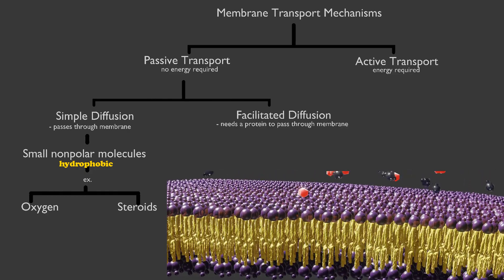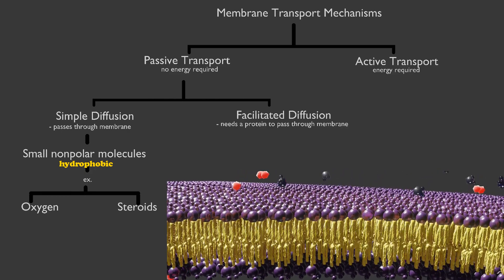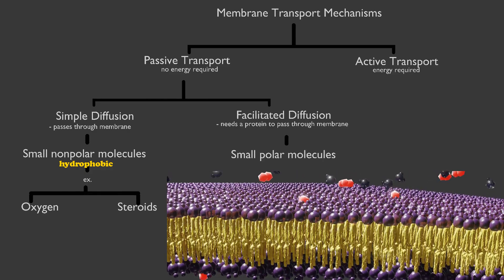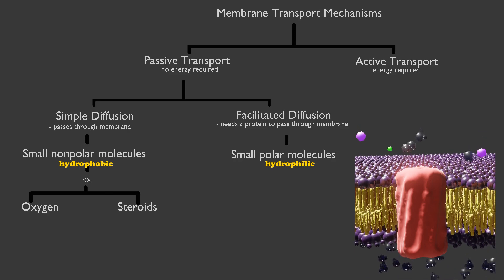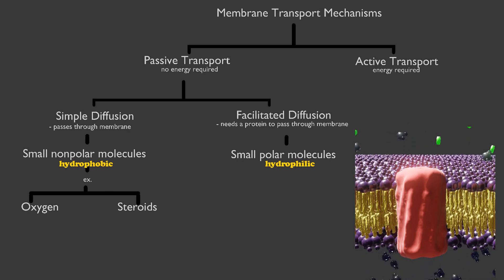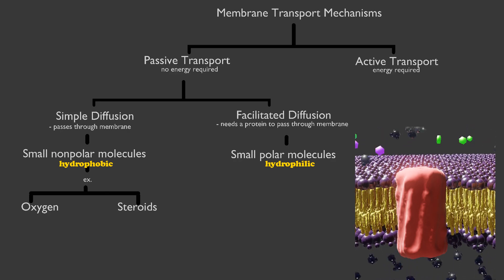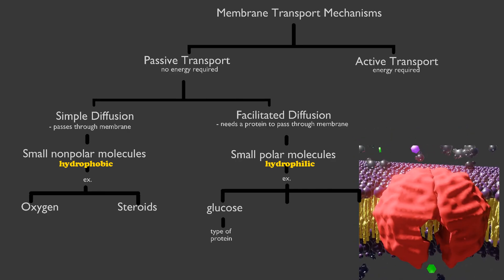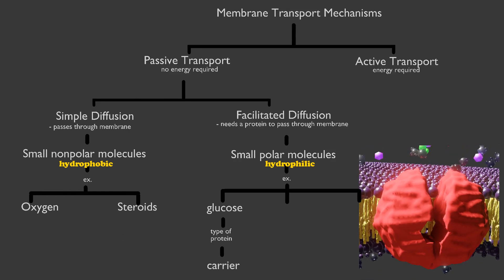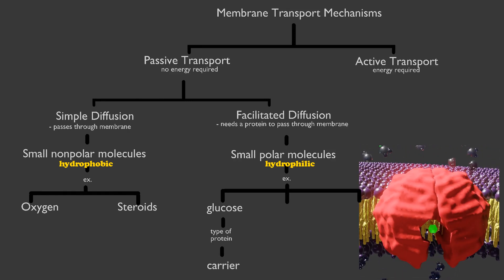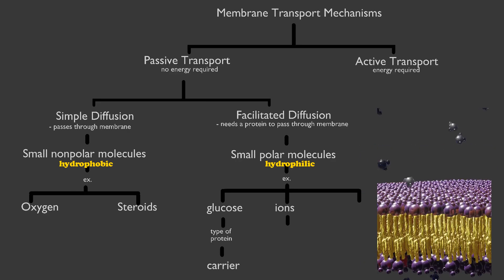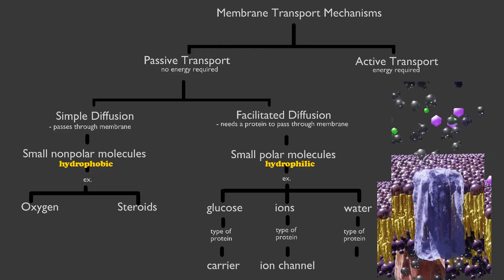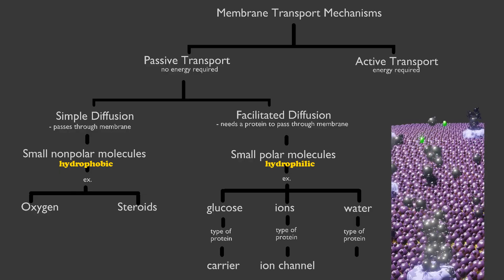On the facilitated diffusion side, small polar molecules need a protein to cross the membrane. Glucose requires a carrier protein — the revolving-door-like protein that undergoes a conformational change. Ions use an ion channel. And water moves through the process of osmosis using an aquaporin channel.